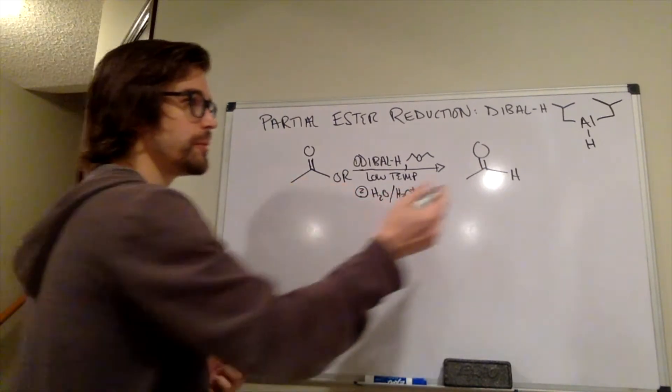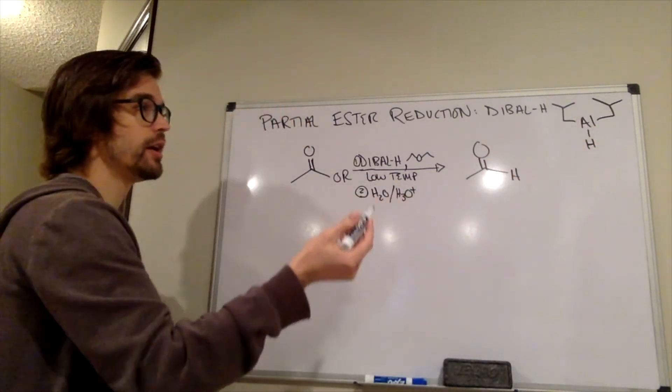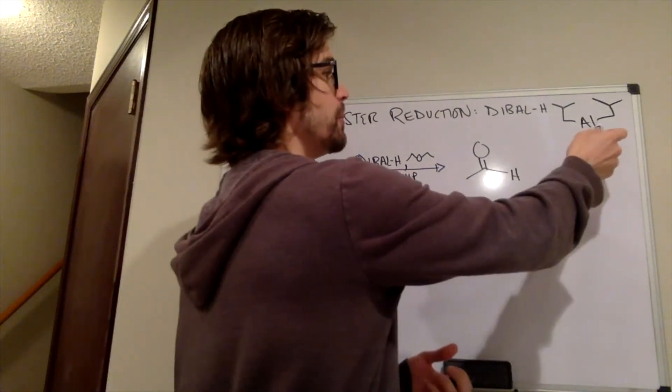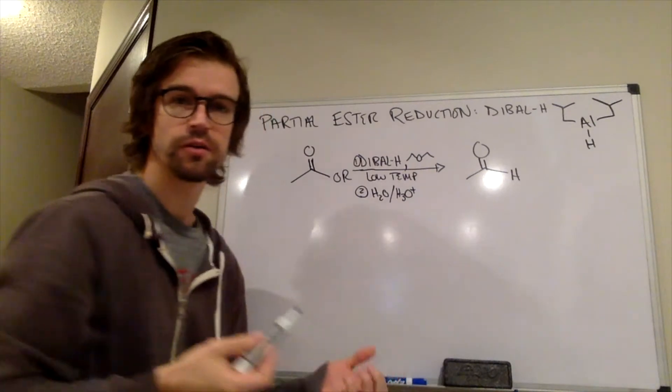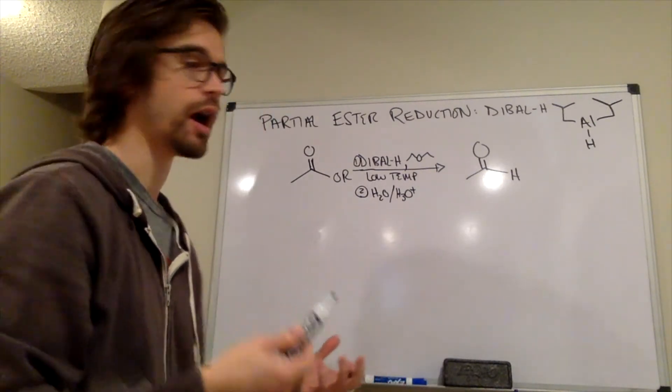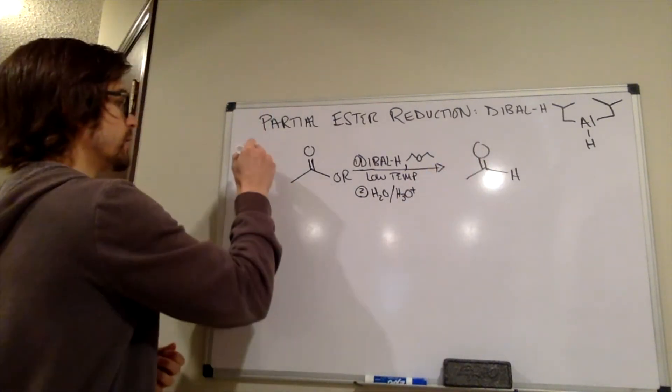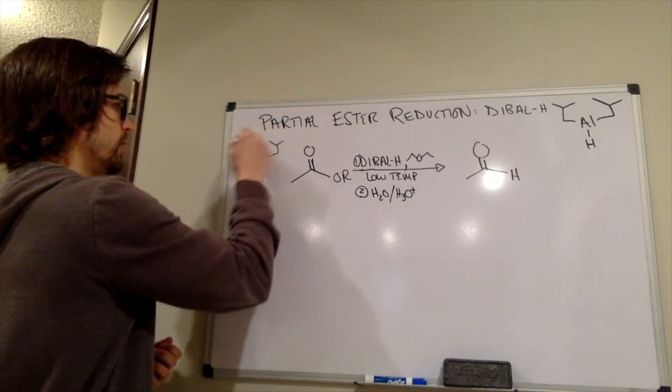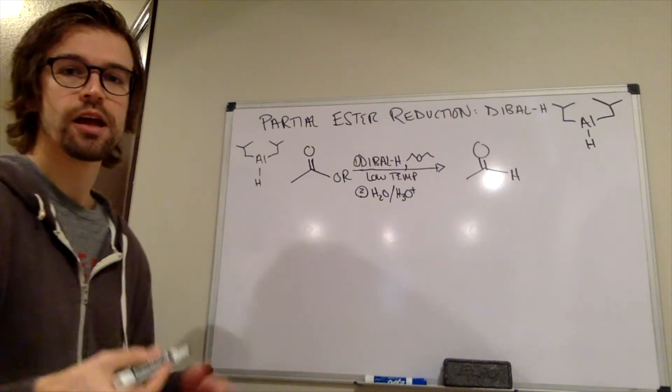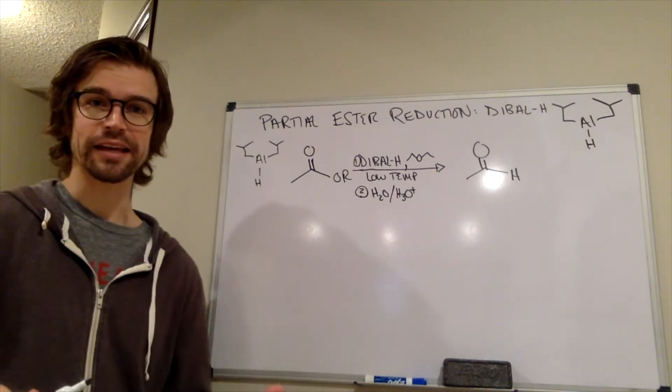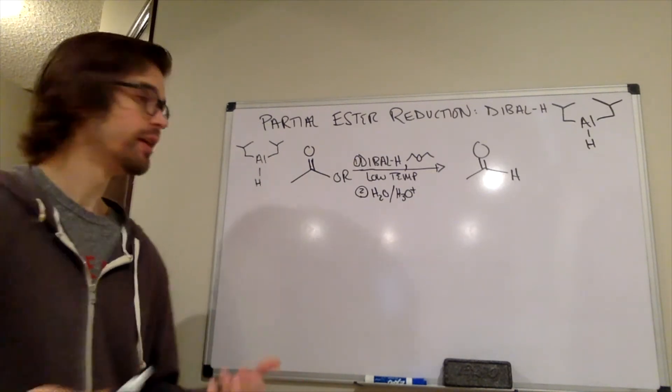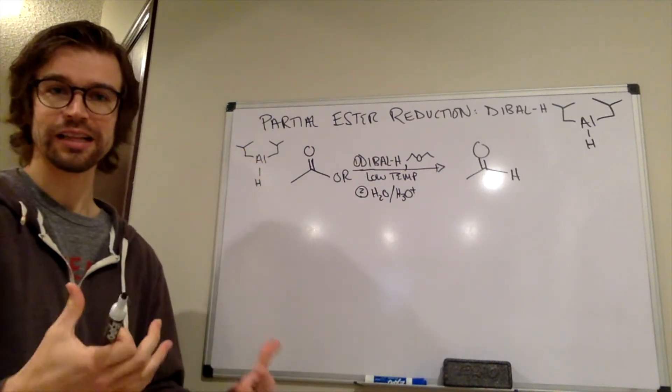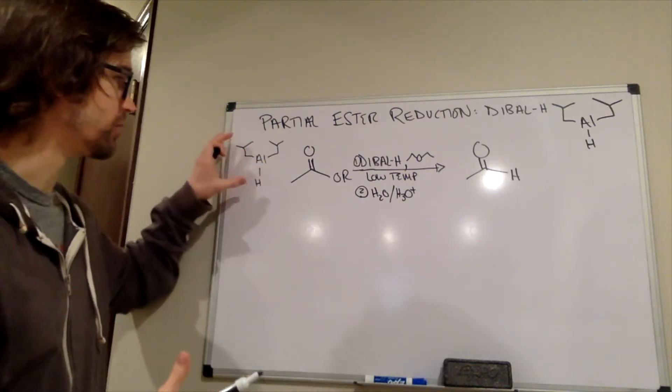Well, things are a little bit different with dibal-H. In lithium aluminum hydride, the aluminum is negatively charged formally because it has four hydrogens on it. But in this case, aluminum is neutral. It's just got three things off of it, which means that it's lacking an octet. And that means that it is wanting electrons. This is now electrophilic.